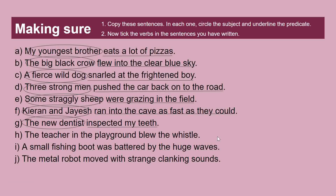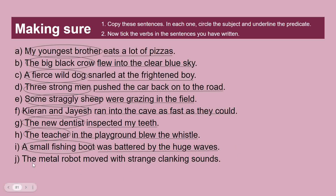Sentence H: 'The teacher in the playground blew the whistle.' The subject is 'the teacher' and the predicate is 'in the playground blew the whistle.' Sentence I: 'A small fishing boat was battered by the huge waves.' The subject is 'a small fishing boat' and the predicate is 'was battered by the huge waves.' Sentence J: 'The metal robot moved with strange clanking sounds.' The subject is 'the metal robot' and the predicate is 'moved with strange clanking sounds.'